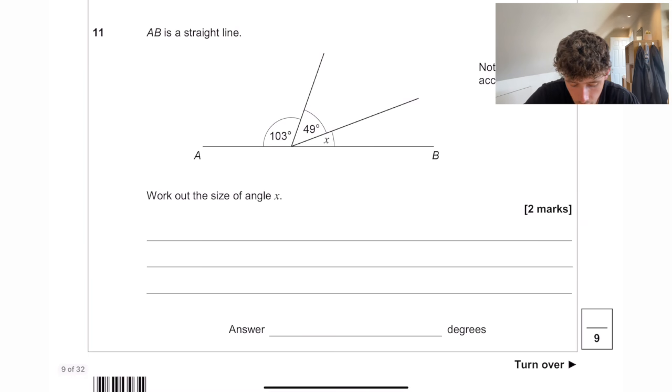AB is a straight line. Work out the size of angle X. So 103. Again, make sure you write your workings. I know it's tempting not to. 103 add 49 is 152. And then 180 take away 152 is equal to 28 degrees.